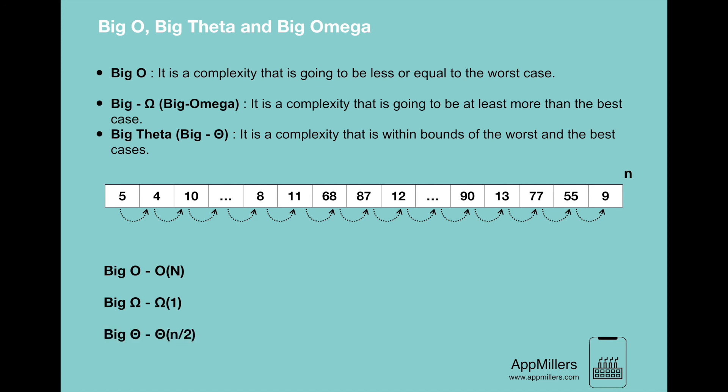In terms of Big Theta, it will be Θ(n/2). This is the average time that is needed to find any given number. This is because for finding different numbers, we need various units of time, so we need to take the average of these numbers.